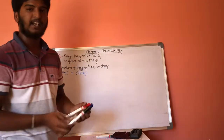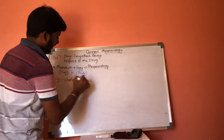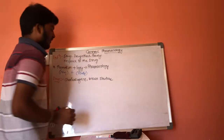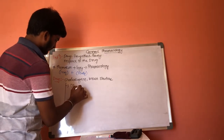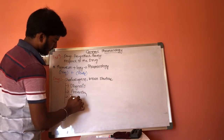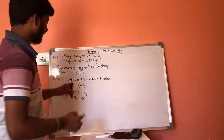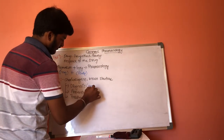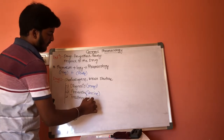A drug is a chemical agent whose structure is known to us. A drug is used under three conditions: Diagnosis, Prevention, and Treatment. Diagnosis is the test used for confirmation of disease, which can be done by X-rays. Prevention can be done by vaccines, and treatment can be done by antibiotics.